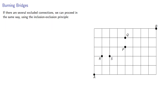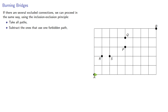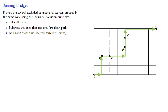And if there are several excluded connections, we can proceed in the same way using the inclusion-exclusion principle. We'll take all possible paths, subtract the ones that use one of the forbidden paths, add back those that use two, subtract those that use three, and so on.